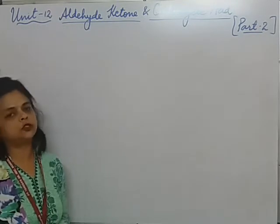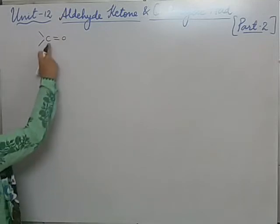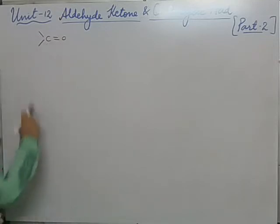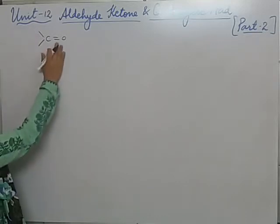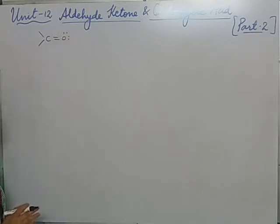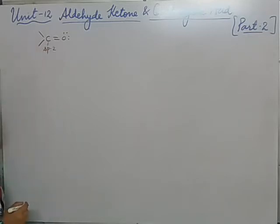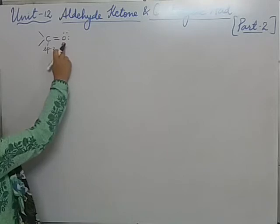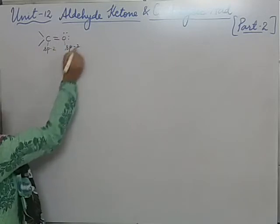Now we will discuss the structure of the carbonyl group. The C=O group is called the carbonyl group — if one or both sides have H it can be an aldehyde, and if both sides have alkyl groups it is a ketone. This oxygen has two lone pairs of electrons. The hybridization state of the carbon is SP2, because it is forming 3 sigma bonds. Oxygen also has SP2 hybridization — 2 lone pairs and 1 sigma bond.